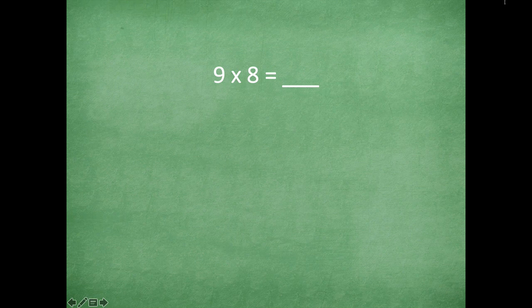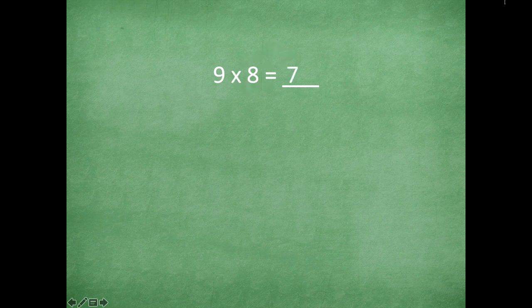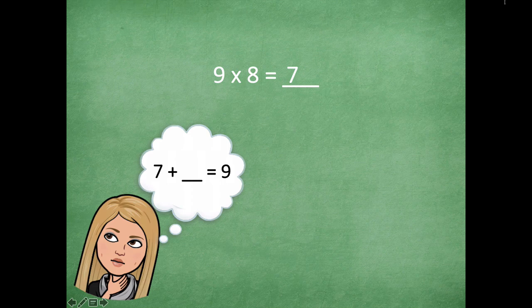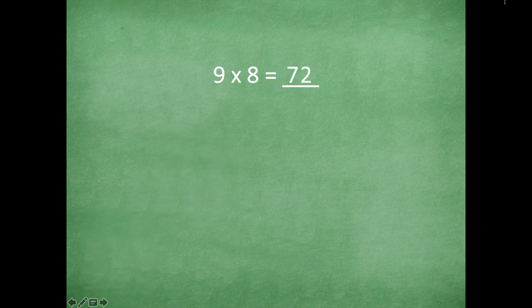Make sure to click pause if you need more time, otherwise here we go! One less than eight is seven, and seven plus what equals nine? Seven plus two — so seventy-two. Nine times eight equals seventy-two. Mind blown again!